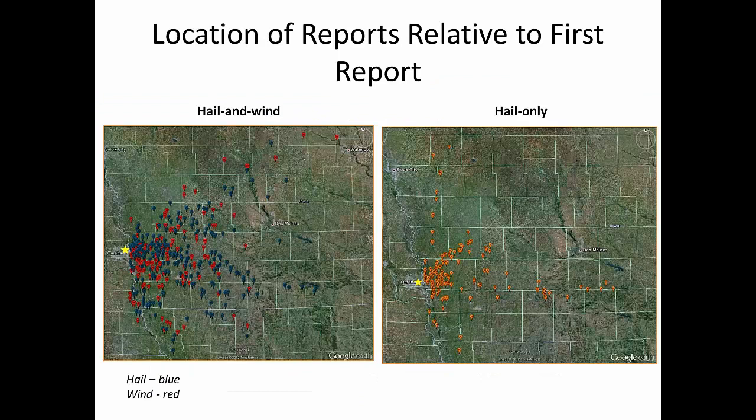One thing we noticed right away is the hail-only events were shorter in duration — over a quarter of the hail-only events lasted only 30 minutes or less, whereas the hail and wind events tended to last much longer, with some lasting several hours. Using that knowledge, we wanted to see in a storm-relative sense how far downstream these reports lasted. We took each supercell, placed the first storm report on Omaha, Nebraska, and the hail and wind cases tended to extend further downstream into Iowa, whereas the hail-only cases were clustered right near that first report.